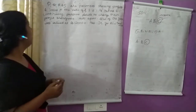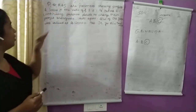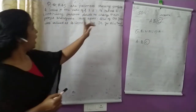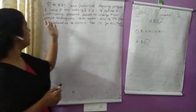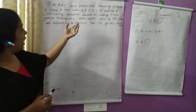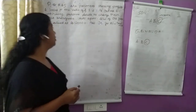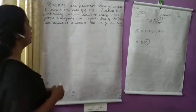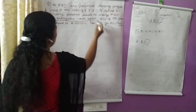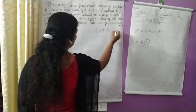Let's discuss the question. P, Q, R, and S share profits and losses in the same ratio of 4:3:2:1. They decide to change their profit sharing ratio into an equal ratio for P, Q, R, and S.